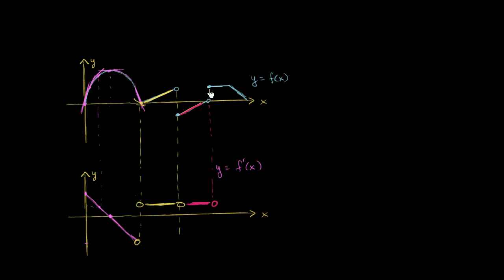Then we go up here — the value of the function goes up, but now the function is flat. So the slope over that interval is 0. The slope over this interval right over here is 0. And then finally, in this last section, the slope becomes negative — but it's a constant negative. And it seems actually a little bit more negative than these sections were positive. So I would draw it right over there.